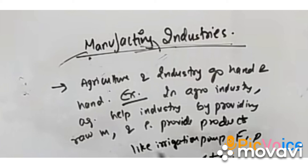Agar industries nahi hoti toh bohat sara agricultural product unsold rah jata. This is especially true of agro-industries, which prove that agriculture aur industries ek saath hand in hand chalti hain and they are interdependent. The agro-based industries depend upon agriculture for raw materials like wheat, rice, cotton, jute, etc. — kyunki hum raw nahi kha sakte, uski processing industries mein zaruri hai. They also provide pumps, fertilizers, and insecticides to farmer communities.